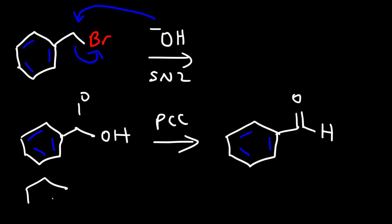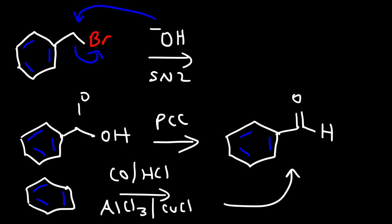So here it is. Let's say if you have benzene, you can react it with carbon monoxide, hydrochloric acid, aluminum chloride, and copper chloride. And this will also give you benzaldehyde. So that's another way in which you can make this compound.